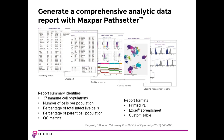MaxPar PathCenter software automatically analyzes data in as little as five minutes. A report of results is automatically generated. The report summary identifies 37 immune populations, the number of cells per population, the percentage of total intact live cells, and the percentage of parent cell populations as well as a QC matrix. The report can be printed as a PDF or viewed in an Excel spreadsheet, and can also be customized to the researcher's needs.